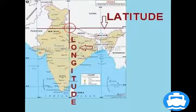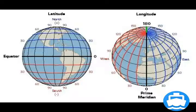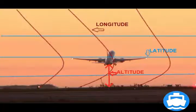Before we proceed further, let us check how positions are determined on Earth. As you have seen just now, it is by means of latitude and longitude. Suppose you are in a flight — then how is the position determined? Three factors determine it: latitude, longitude, and altitude above sea level.